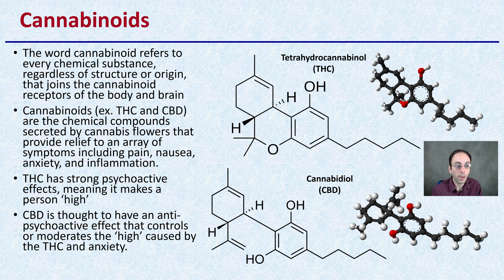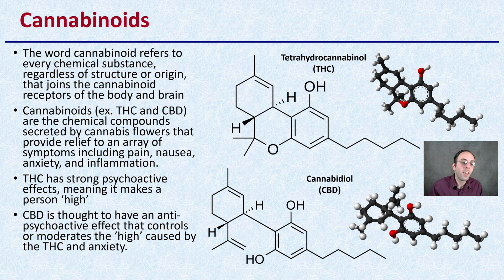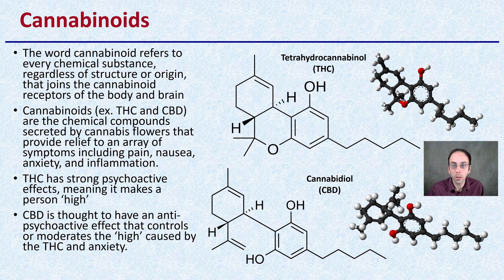THC has that strong psychoactive effect, meaning it makes a person high — that euphoric high — and you can see the chemical structure located up in this direction over here. CBD, shown a little bit lower on this side, is thought to have an anti-psychoactive effect that controls or moderates the psychoactive high caused by THC and anxiety. It's also been shown to have some potential medical benefits, such as reducing seizures. You can notice their chemical structures are very similar, so just be mindful that small changes in chemical structure can have profound effects. The main difference between THC and CBD is located right here with the bonds in this region.